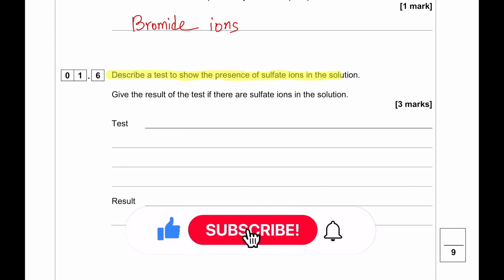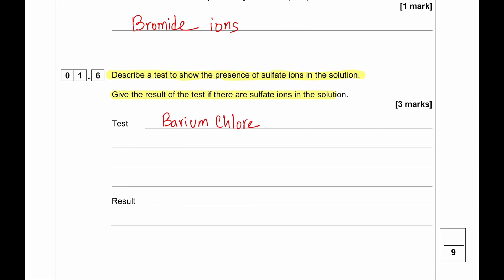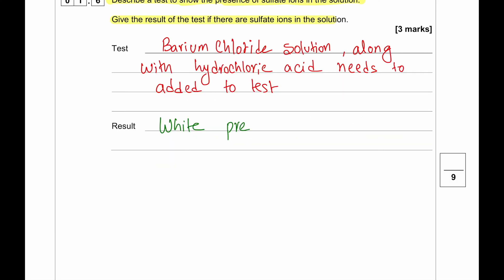Describe a test to show the presence of sulfate ions in the solution. Give the result of the test if there are sulfate ions in the solution. To test for sulfate ion, we will use barium chloride solution along with hydrochloric acid. So add barium chloride. Positive result will be indicated by white precipitate.